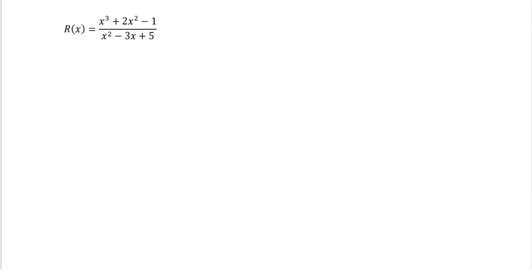In our next example, again we are finding the oblique or slant asymptote. Notice that the degree of the top is one more than the degree of the bottom. That's what indicates we need to find the oblique. We need to use long division this time. We can't use synthetic because the divisor, the denominator, is not linear.